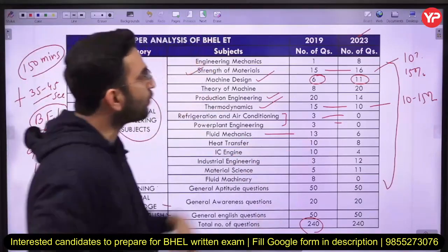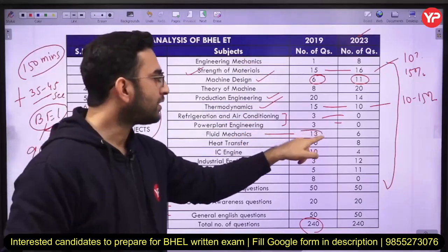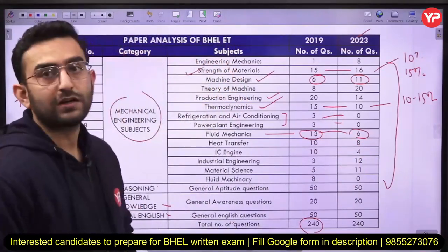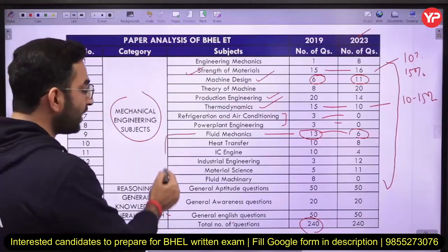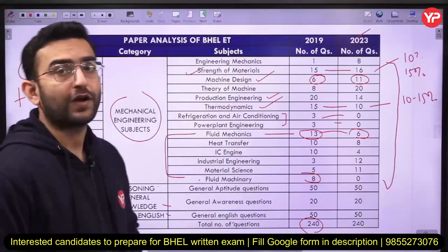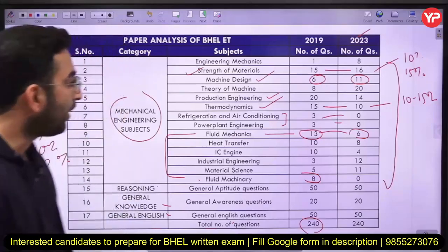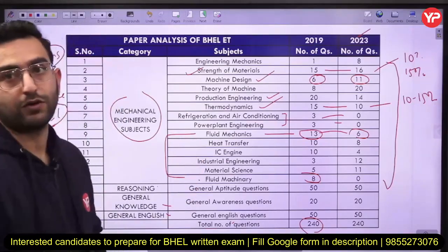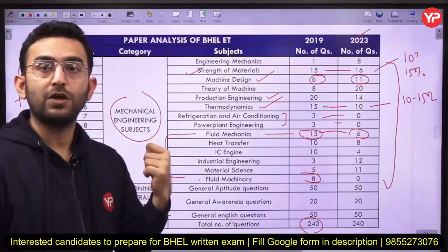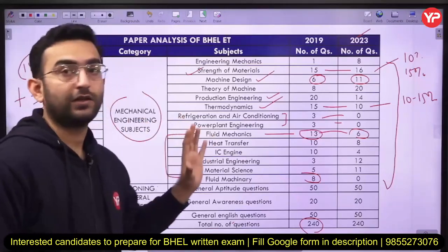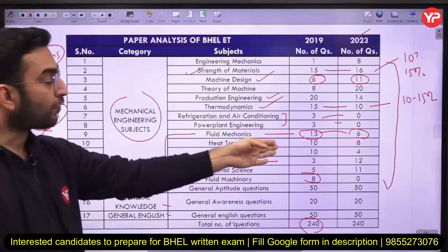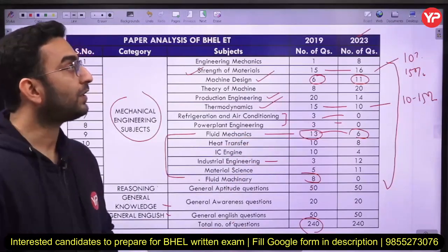Moving to fluid mechanics — in 2019, only 13 questions were asked, and in 2023 the number decreased to just five or six questions. Along with fluid mechanics, in fluid machinery the number of questions was very high in 2019, but in 2023 it was almost nil. Heat transfer is a very important subject for this PSU exam, as a large number of both numerical and theoretical questions have been asked from it. Industrial engineering showed a significant increase in questions in 2023 compared to 2019.